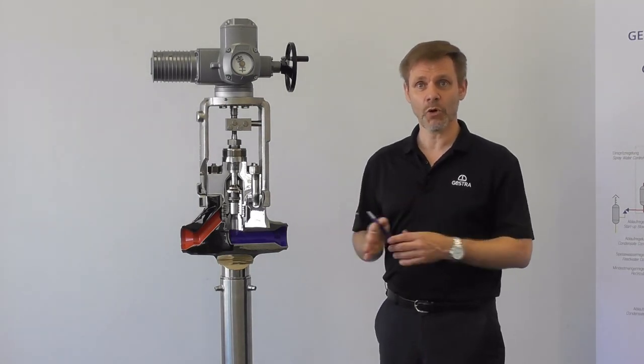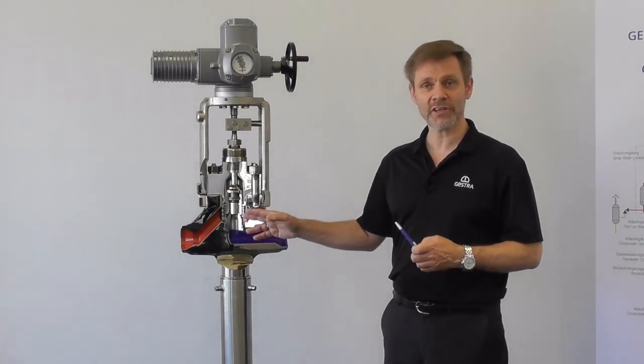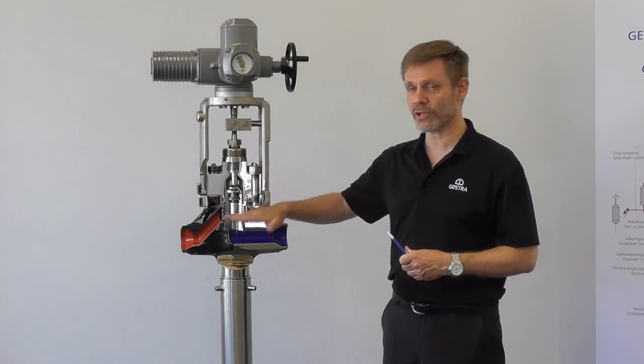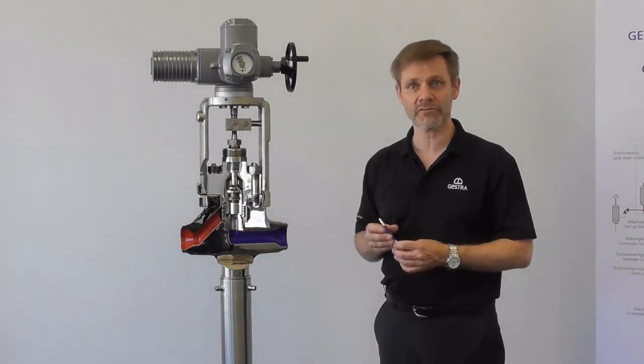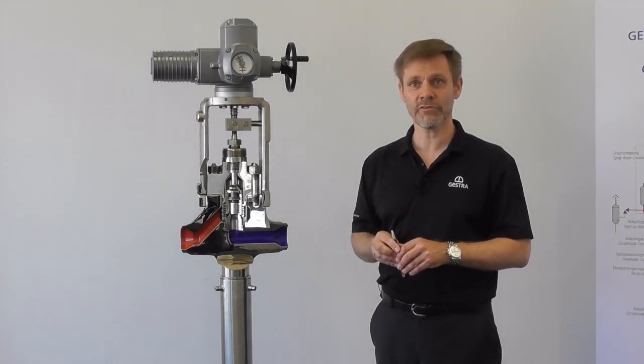At the end of the day, all parts are changeable including the seat. That means you have easy maintenance. The valve body stays in the line and you can pull out all internal parts out of the valve and replace them with new ones if necessary.